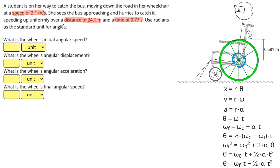Use radians as a standard unit for angles. In this question, we're provided with all of our known variables in a linear quantity format. So rather than being given the angular speed of our wheels, we're given the linear speed that she's traveling at. And rather than giving the angular displacement that the wheels travel through, we are given the linear distance that the wheels cover. The question wants us to figure out angular acceleration and final angular speed, so we're going to need to first convert any linear quantities into angular quantities, and then use those in our equations to figure out our unknown angular quantities.